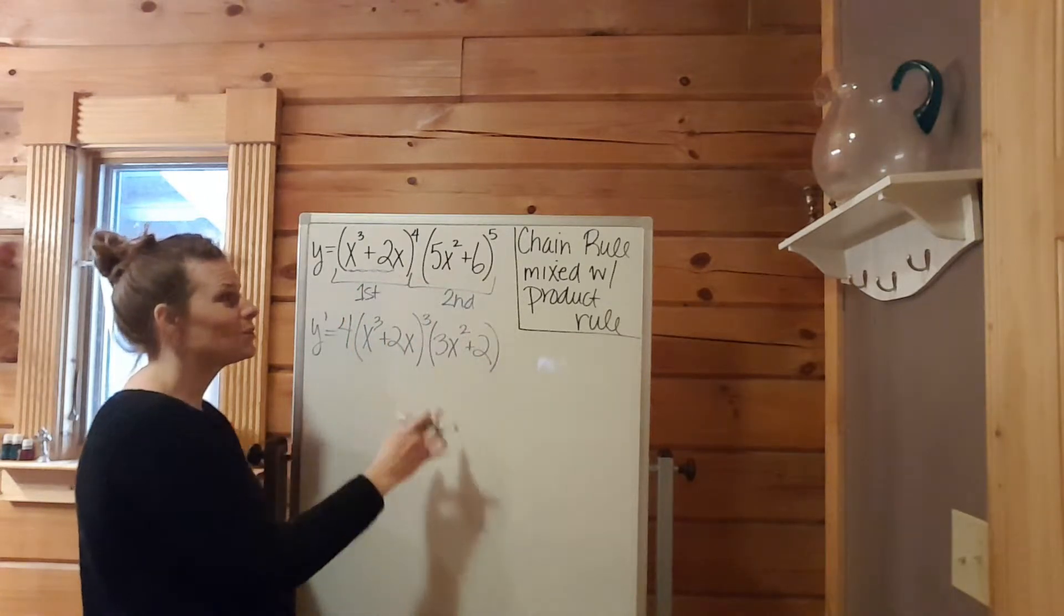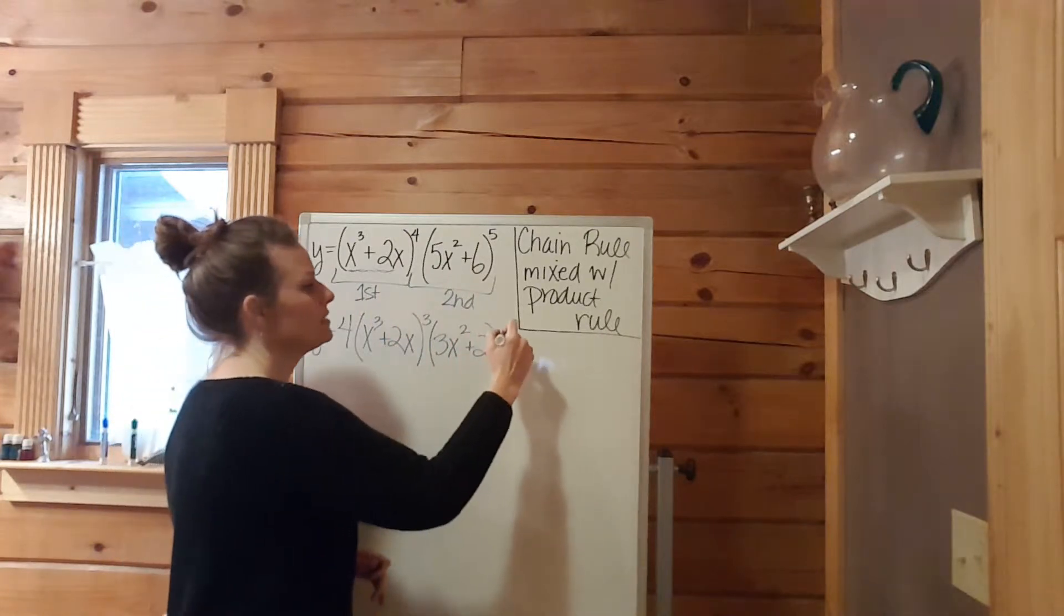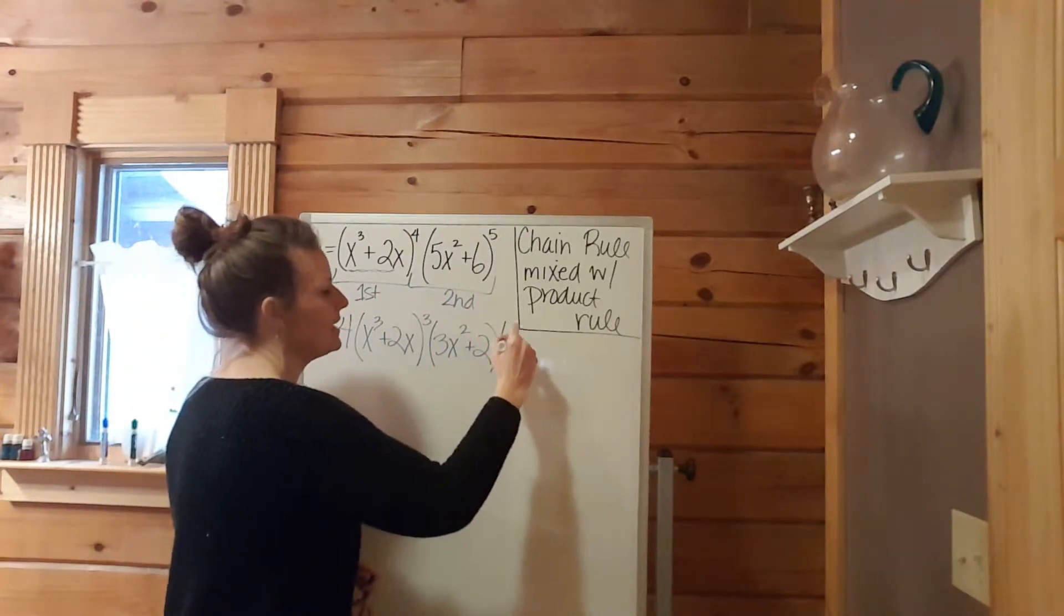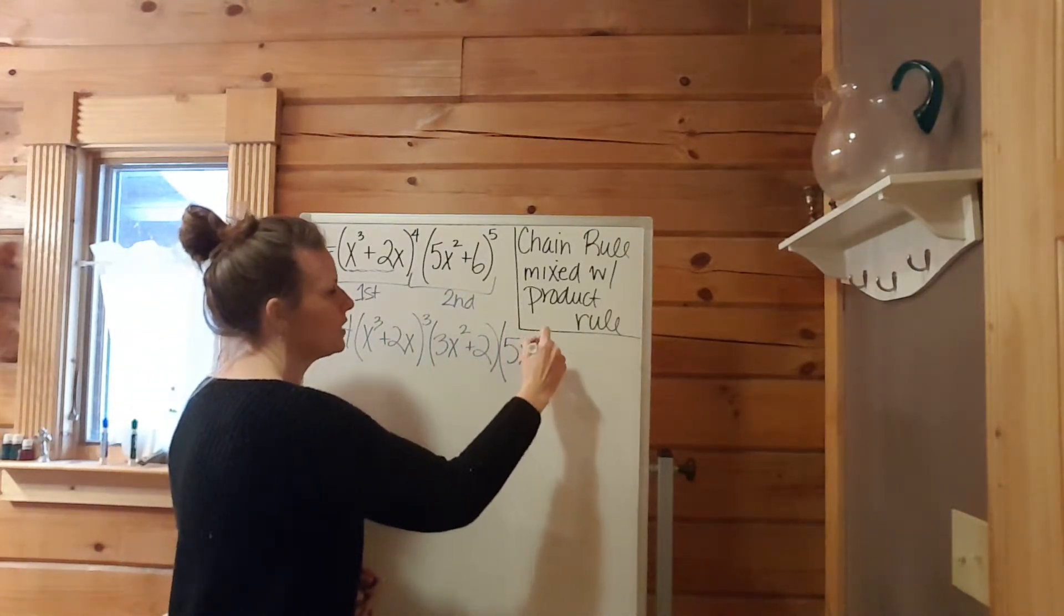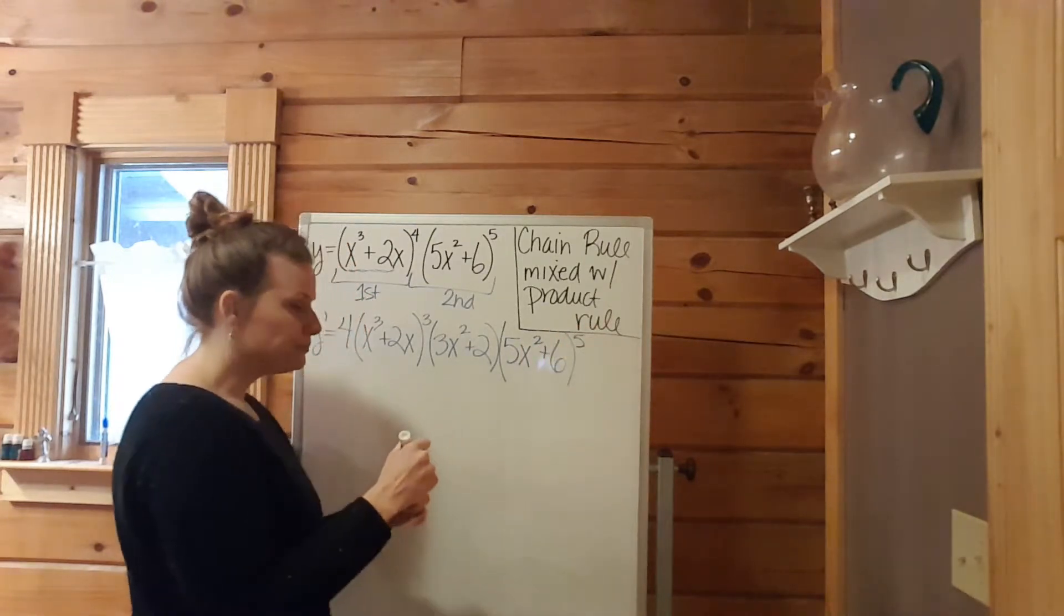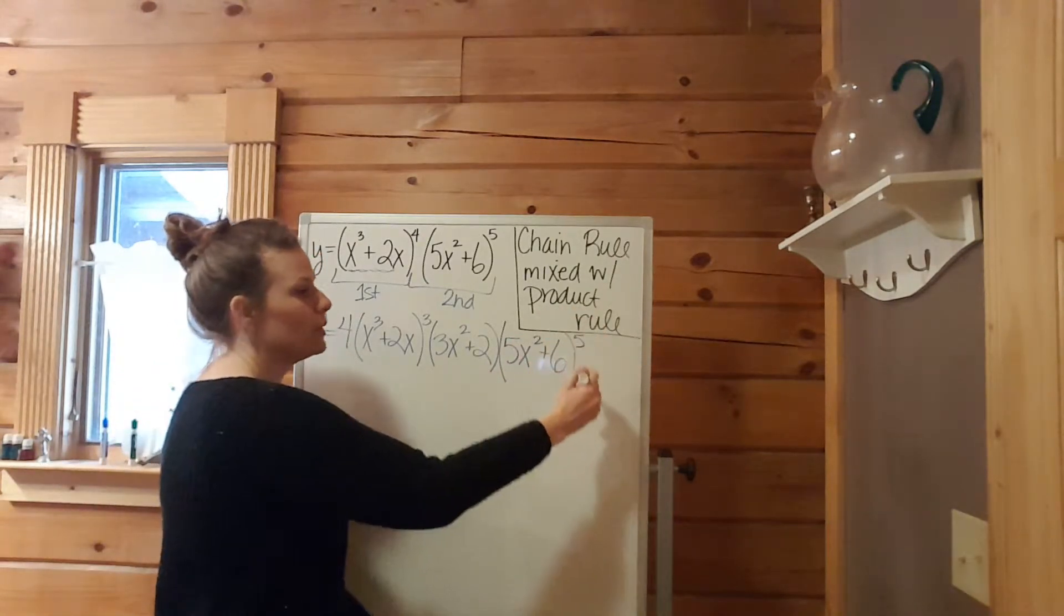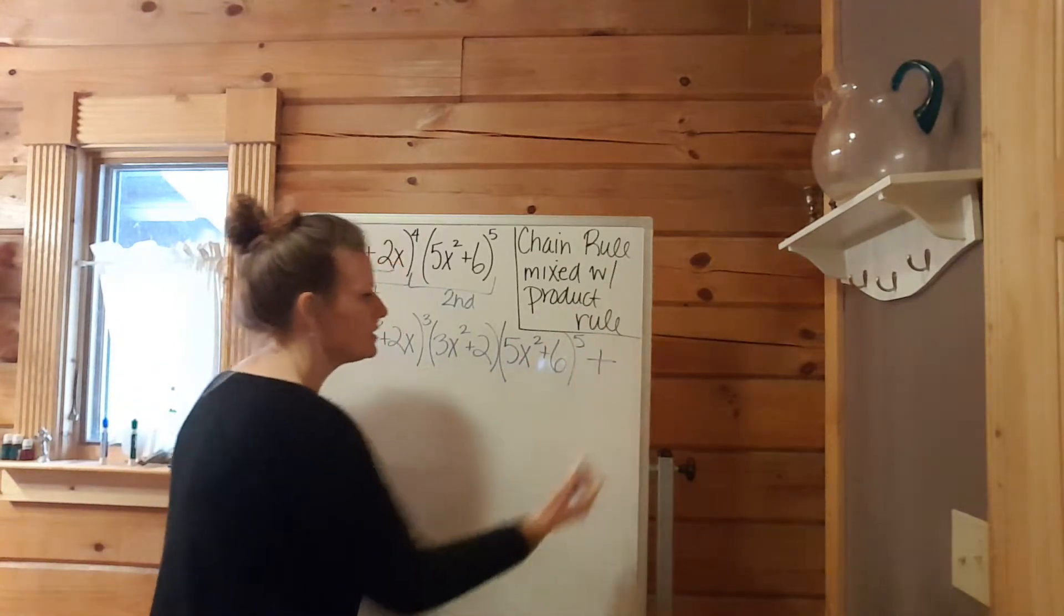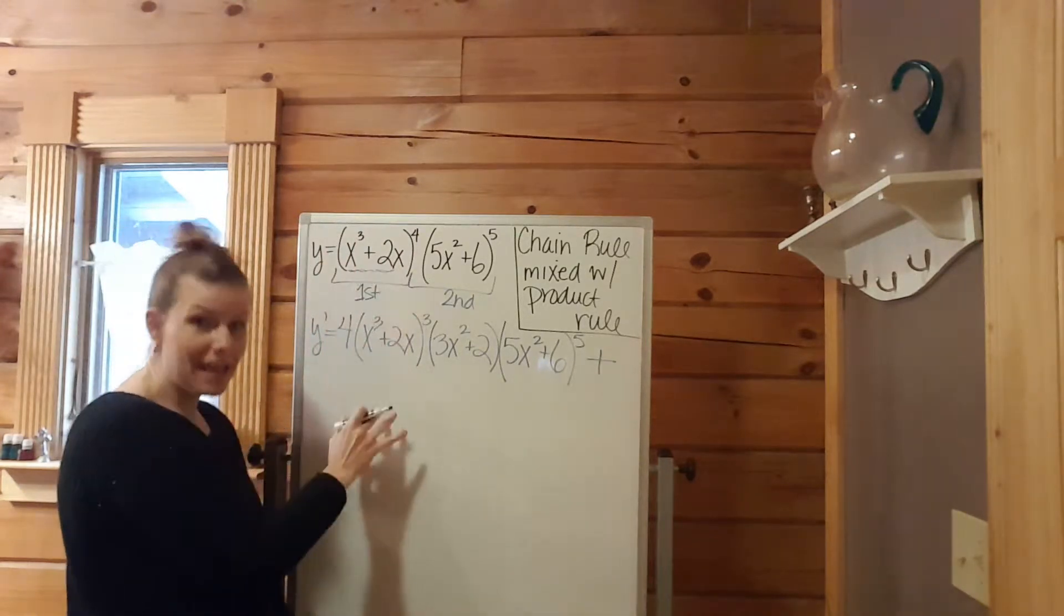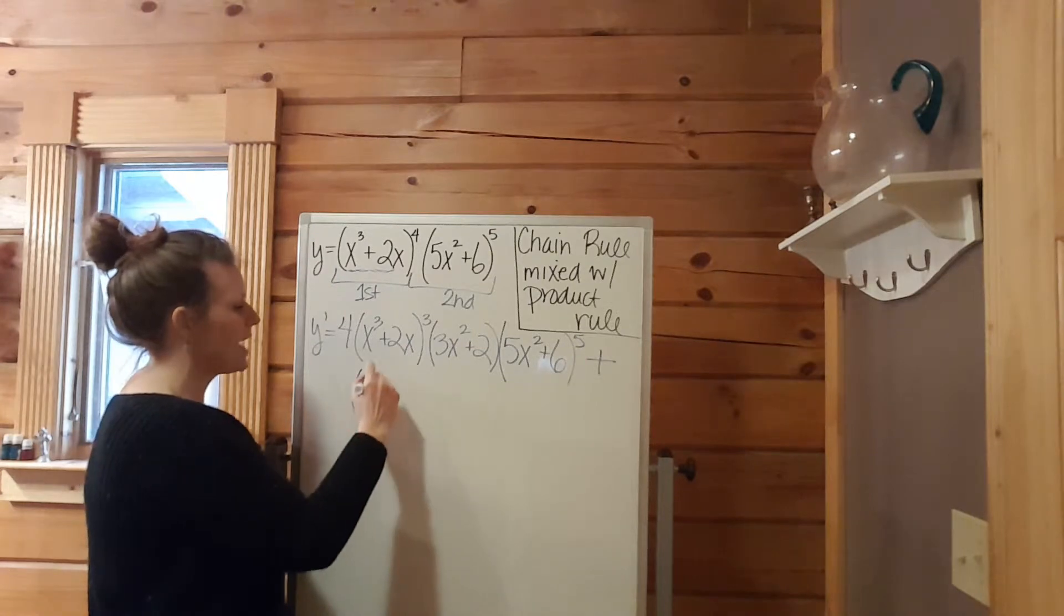Back to the product rule, we say derivative of the first times keep the second. I'm just going to keep the second as is, (5x² + 6) to the fifth power. Now we're about halfway done, because we still have to say with the product rule, plus, this time we keep the first.